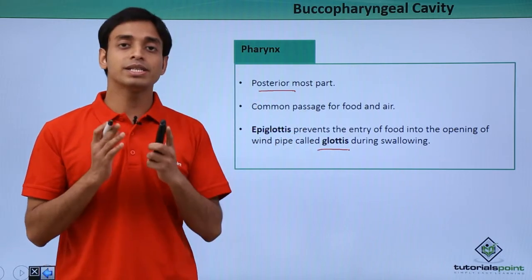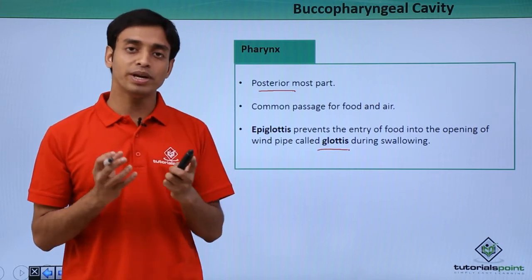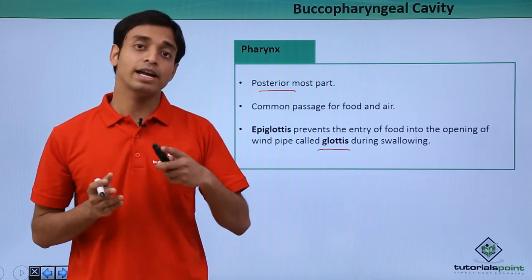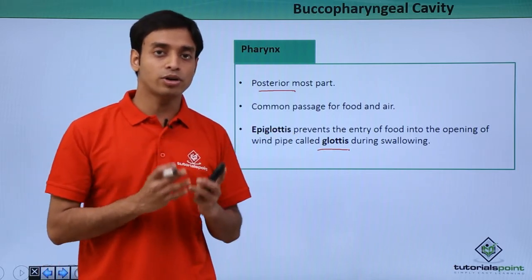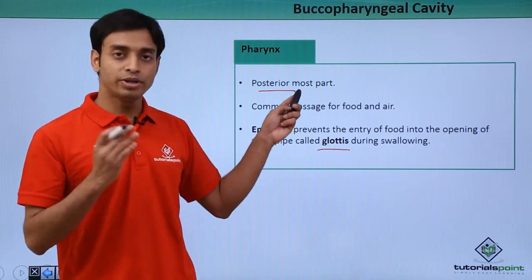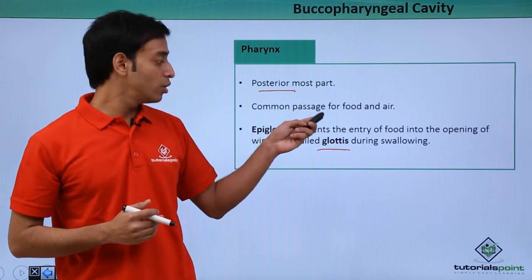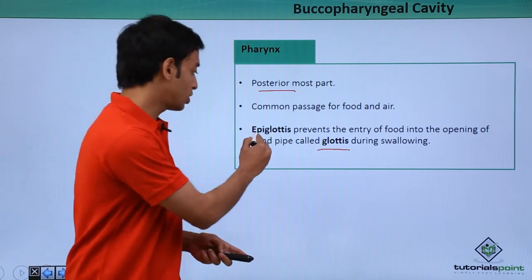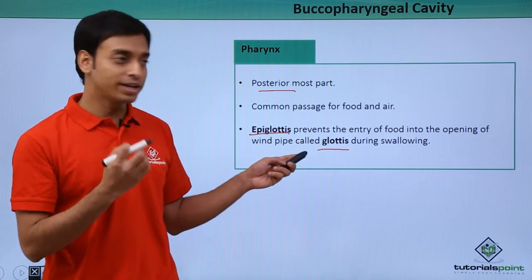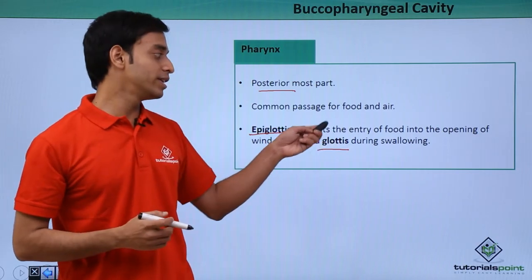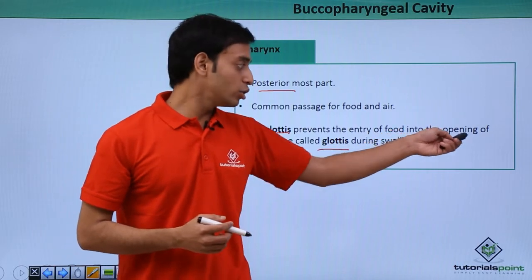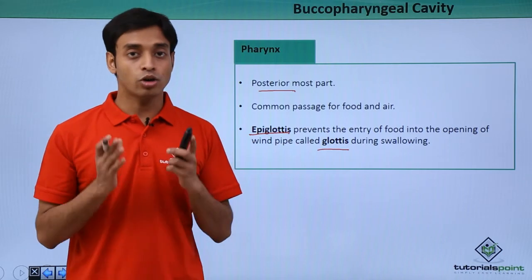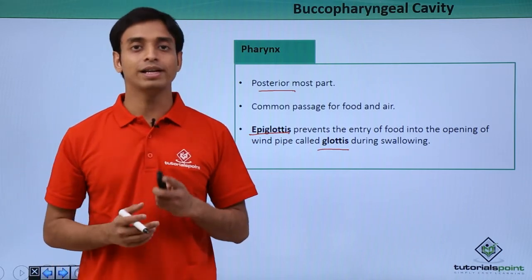Since the pharynx serves as a common passage for food and air, there remains a high chance that food may enter the windpipe, causing a person to choke — and in severe cases this can be fatal. To prevent this, a muscular and cartilaginous structure known as the epiglottis is present at the glottis, the opening of the windpipe, and it prevents food from entering during the process of swallowing.